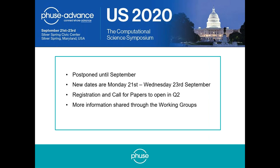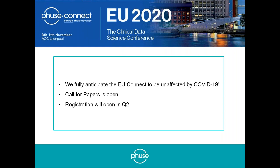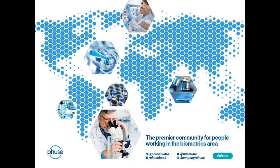With regards to the CSS, you might have seen the emails that we had to postpone this until September. New dates are currently Monday the 21st to Wednesday the 23rd of September. The registration and the call for papers will open quite soon. And if you are a member of the working groups, you will also hear more information there. With regards to our European Connect event, which is scheduled for early November in Liverpool, right now we fully anticipate that the European Connect event will be unaffected by the COVID-19 situation. The call for papers is already open and registration will open quite soon in the second quarter as well.